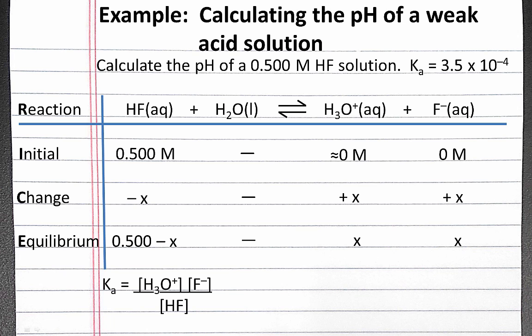Now we can write our Ka expression and fill in the equilibrium concentrations from our table. At equilibrium, our hydronium and fluoride ion concentrations are x and x, and our HF concentration is 0.5 minus x. So our Ka expression is x squared divided by 0.5 minus x, and this is equal to the Ka for our weak acid HF, which is 3.5 times 10 to the negative fourth.